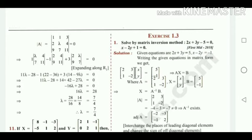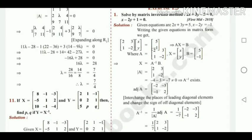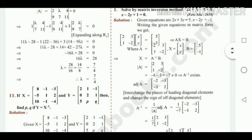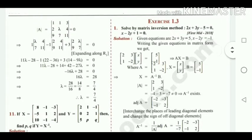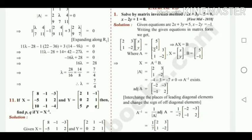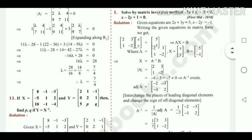The first sum in exercise 1.3: solve by matrix inversion method. 2x plus 3y minus z equal to 0, and x minus 2y plus 1 equal to 0. The given equations have coefficients: the coefficient of variable x and y is 2, 3, 1, minus 2. Write the coefficient of the variable in matrix form. In the first equation, the coefficient of x is 2 and y is 3. In the second equation, x equals 1 and y equals minus 2. Then write the variable x, y in column form, and write the constant term, that is 5 and minus 1.